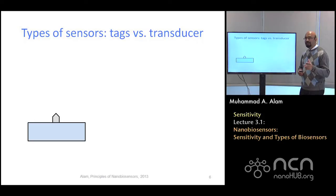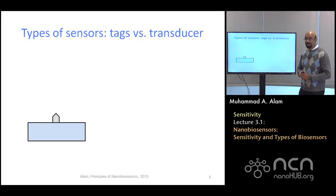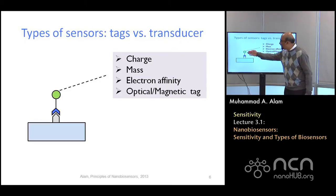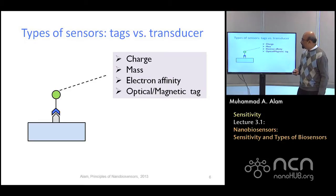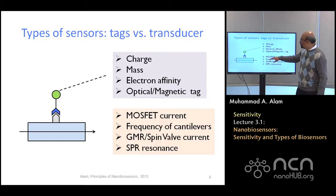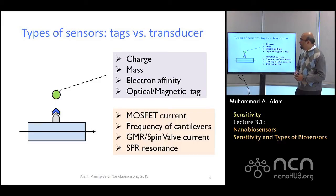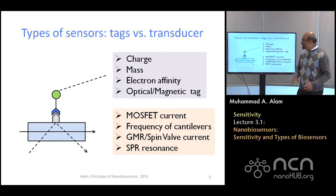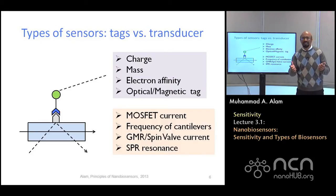There are two different ways of detecting biomolecules. Assume you have a sensor with a receptor probe, and the biomolecule comes and attaches to it. We can use charge, mass, or electron affinity as a tag or marker. If it is an electrical-based sensor, we can look at the change in current associated with the biomolecule. If it is an optical-based sensor, we can ask how the reflectivity of the surface changes once the biomolecule has been attached. We can interrogate one of these properties using one of these transduction mechanisms — that's the general principle of any sensor.